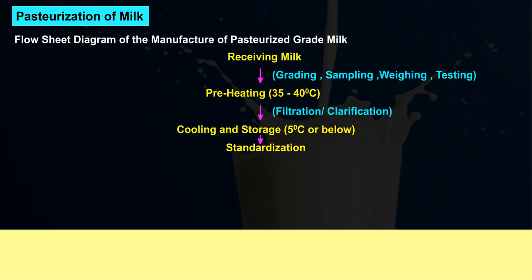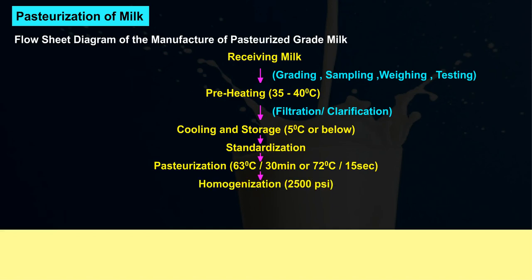Next steps include standardization, pasteurization at either 63°C for 30 minutes or 72°C for 15 seconds, followed by homogenization, bottling or packaging, and finally storage at 5°C or below.